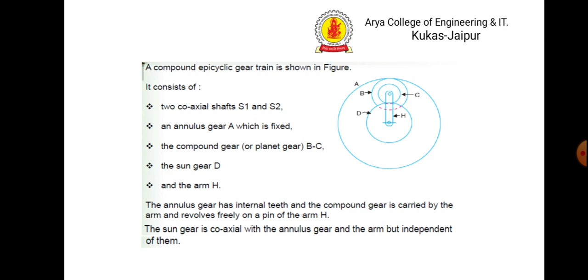The compound epicyclic gear train is shown in the figure. It consists of coaxial shafts s1 and s2. Gear a is the annular gear which has internal teeth. Gears b and c are compound gears, also known as planet gears. Gear d is the sun gear, and h is the arm.